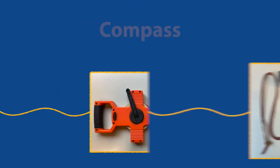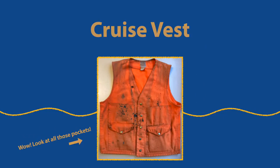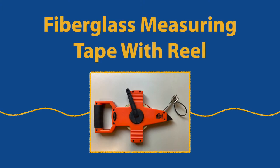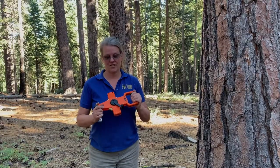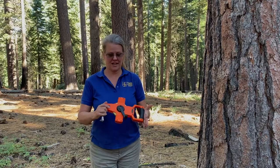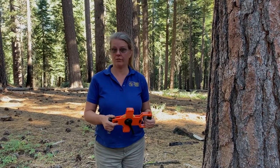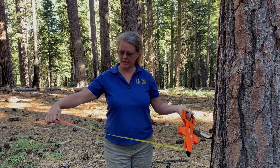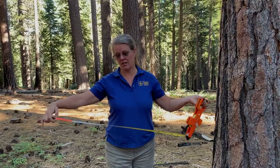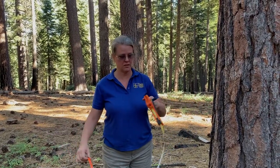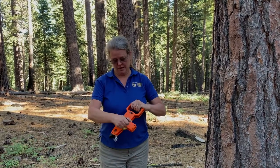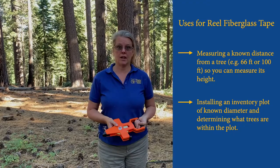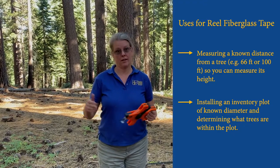A large fiberglass measuring tape with a reel is one key tool. I'll start with a flexible fiberglass measuring tape, which is useful for laying out plots and measuring their radius. This measuring tape is a little different than a regular measuring tape used for construction — it has a different scale, measured in feet and tenths of feet, with meters on the other side. It rolls up, it's rugged, and you can use it in the woods. You'd use it to get a known distance from a tree — for example, getting 66 feet away is important for measuring height. It's also great for installing an inventory plot of a known diameter.